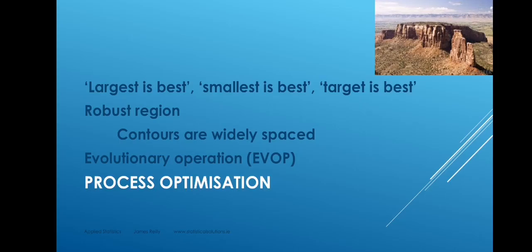Now, for process optimisation, we could have a target which is largest is best, something like product lifetime, or smallest is best, something like cost. Or we could have target is best, where there's a dimension or some other measurement which needs to be at a certain value, neither higher nor lower.